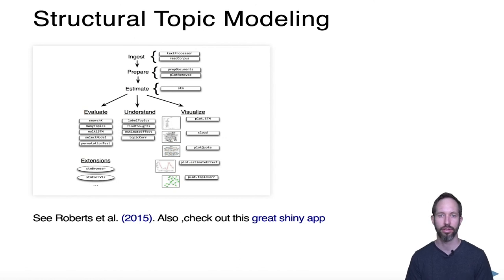What this means is that something as simple as time could really condition the way that words should be grouped with each other. Basically the structural topic modeling allows you to include those covariates as predictors of the probabilities in the assignment of documents to topics.